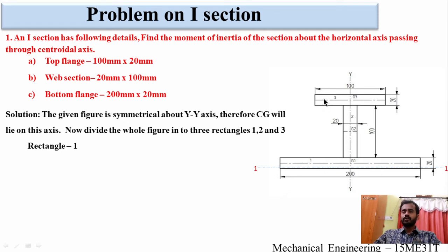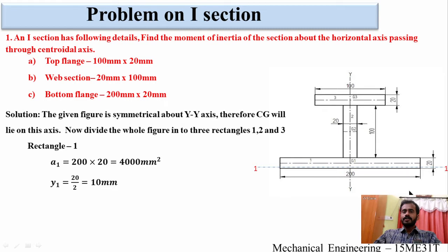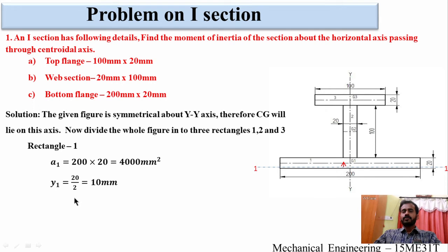Consider rectangle 1. Calculate the area of rectangle 1: A1 = 200 × 20 = 4000 mm². Now calculate distance y1. Y1 is the distance from the reference axis — that is from the bottommost portion of the section, considered as axis 1-1 — to the center of gravity of rectangle 1, point G1. So y1 = 20 ÷ 2 = 10 millimeters.